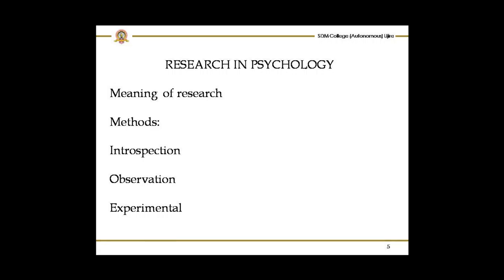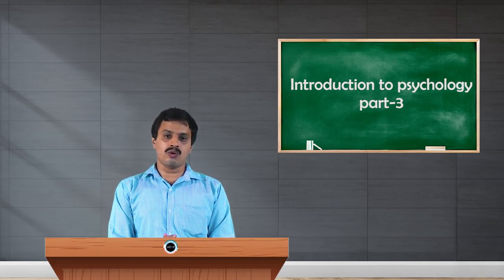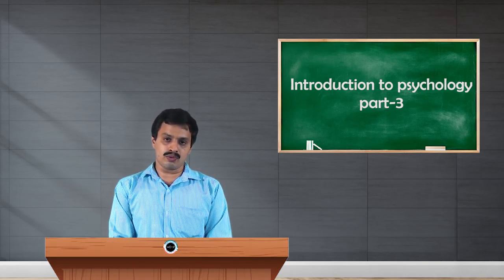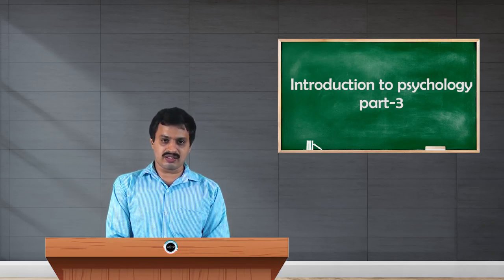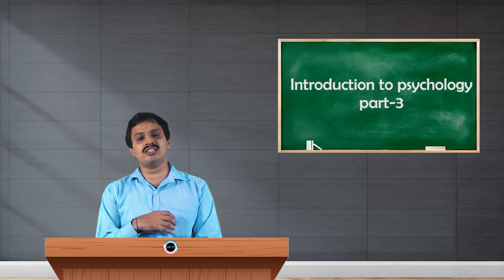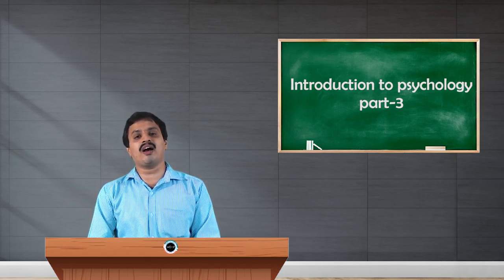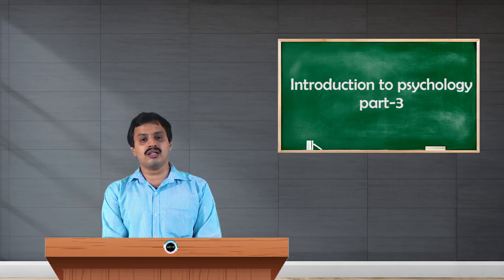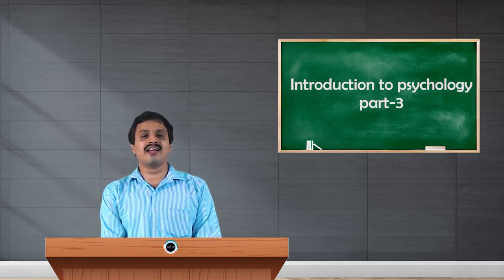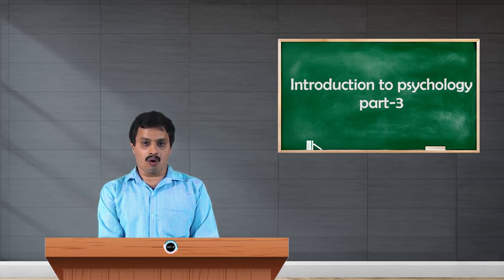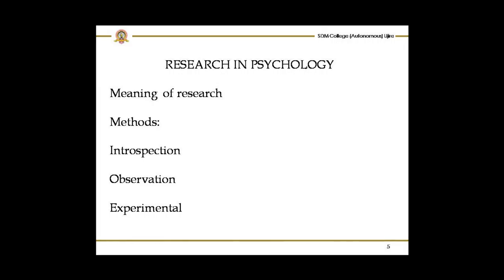In systematic observation, the psychologist or observer develops a pre-arranged schedule covering what to observe, how to observe, whom to observe, when to observe, where to observe, and how long to observe. Keeping all these aspects in mind, the observer records the behavior using gadgets, instruments, or by taking notes. This method is considered one of the standard research and data collection methods.